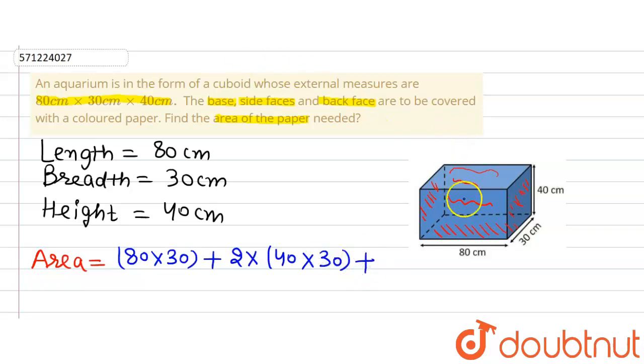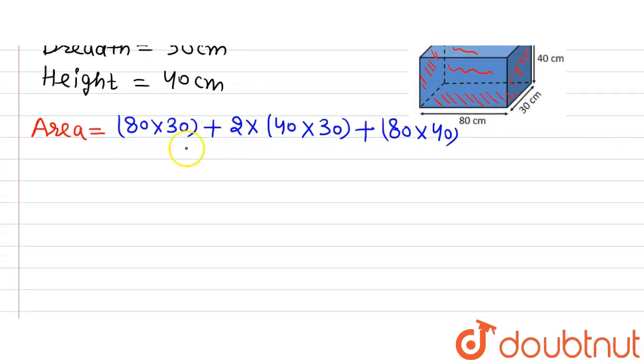Then there is a back face. Back face is having the breadth as 40 centimeter and the length as 80 centimeter. So length multiplied by breadth. Now it's simple. We will simplify it and find out the area of the cloth required.